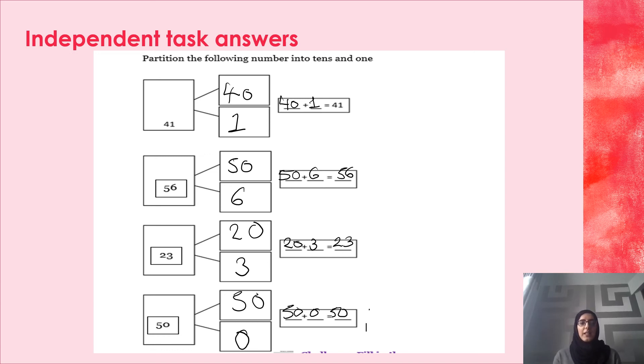Finally, I thought this one's a little bit tricky. We have the number 50. We have 0 ones. There's nothing in the ones column. Then I have 5 tens which makes 50. And then 50 add 0 equals 50. Fantastic, children. Most of you have got this correct.